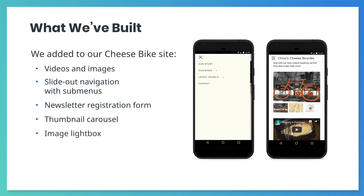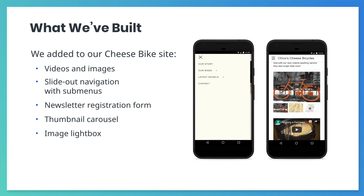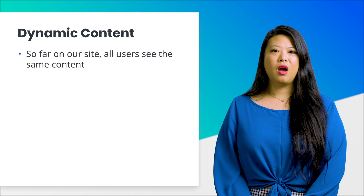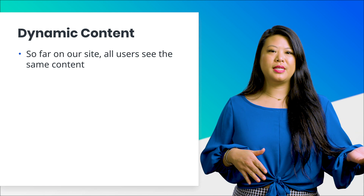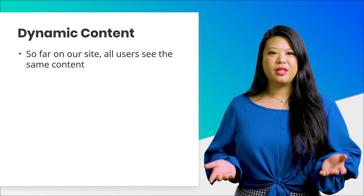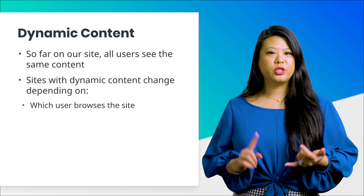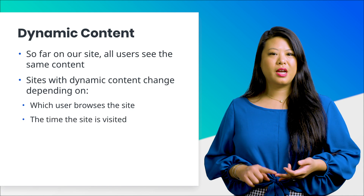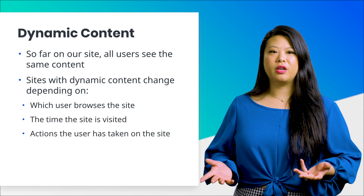Finally, an image lightbox where users can click on images to expand and zoom them in. So, what else is there left to learn? In the site we've built so far, all users see the same content. But when different users see different content for the same page, we call that a dynamic site. The content of a dynamic site changes depending on factors like which user is browsing the site, the time the site is visited, and what the user has done so far on the page.